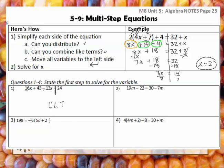Go ahead and do 2, 3, and 4. Pause the video here — all you're telling me is what are you doing first. Are you going to do combining like terms, which is CLT? Are you going to do variables on both sides, which is VBS? Or are you going to distribute? Go ahead and do 2, 3, and 4.